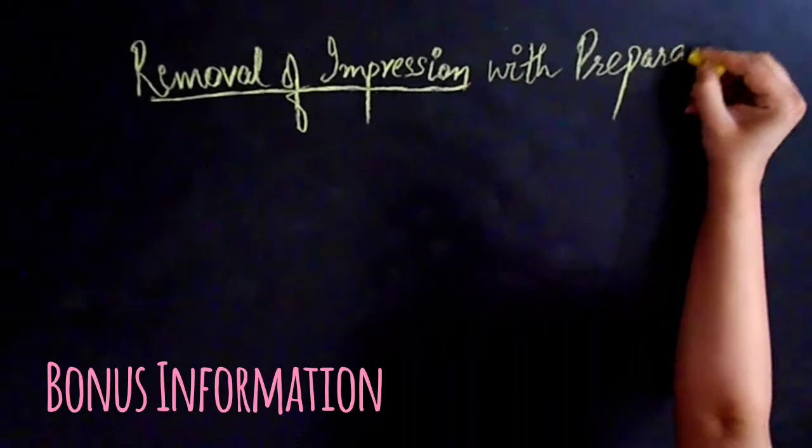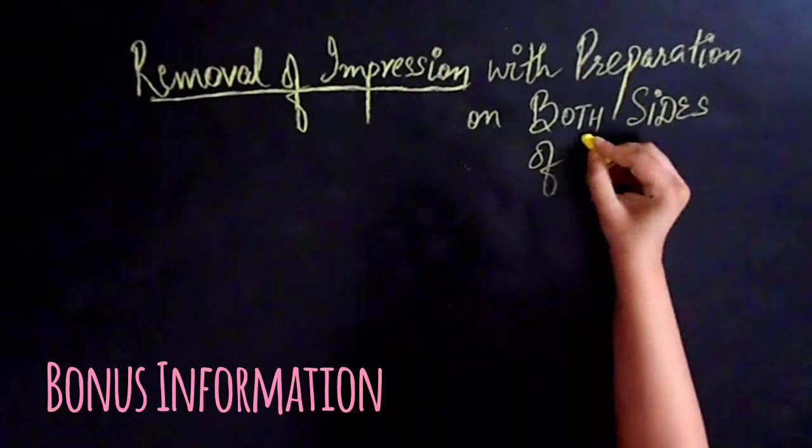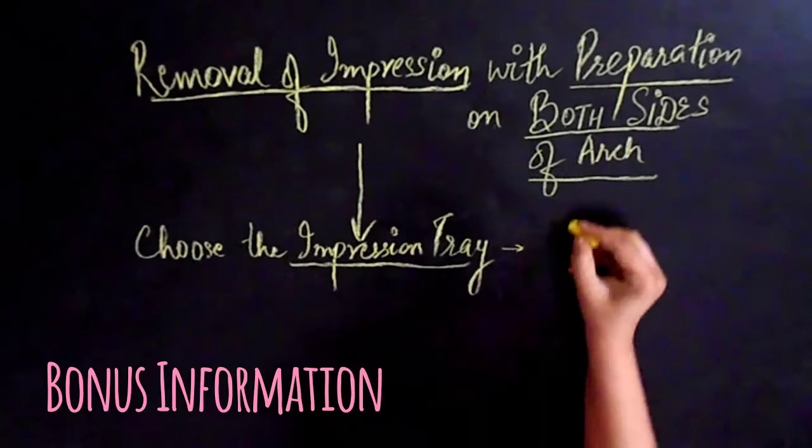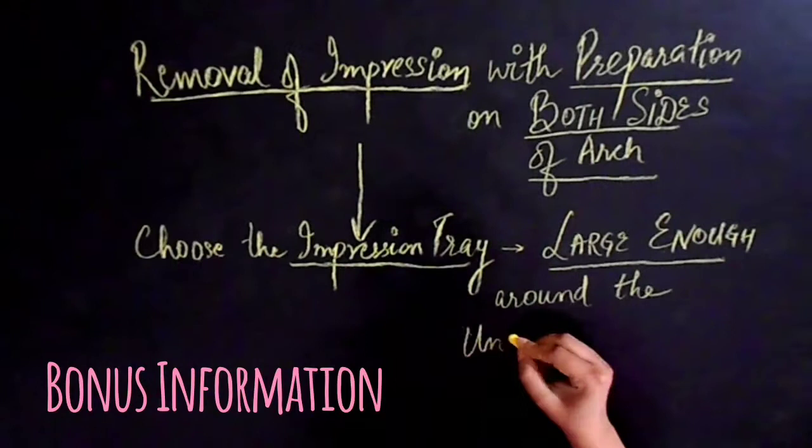Here is a little bonus information for you at the end. What to do for removal of an impression with the preparation on both sides of the arch? Deformation of the impression material around the preparations is inevitable, especially in such a case. What you can do is carefully choose the impression tray which should be large enough around the undercut areas.